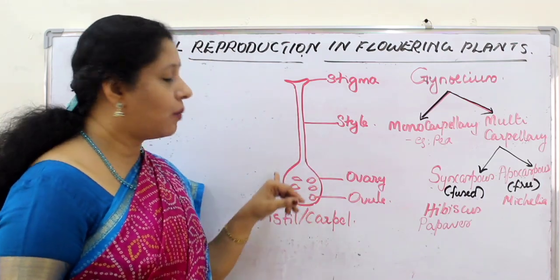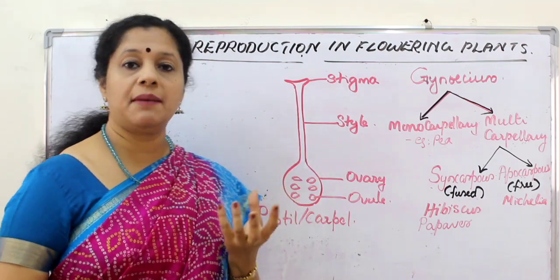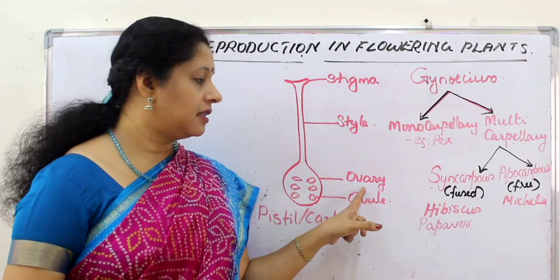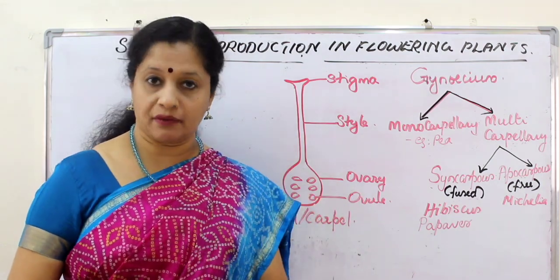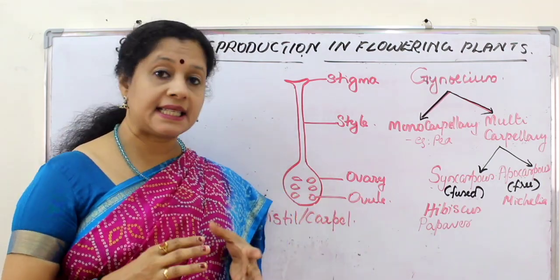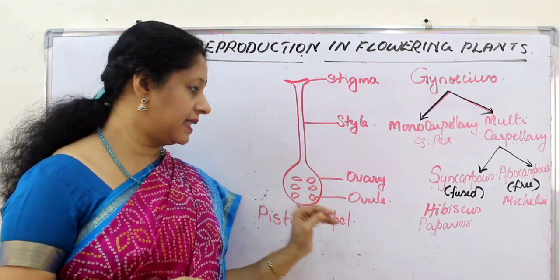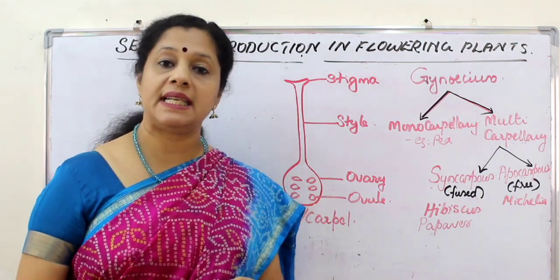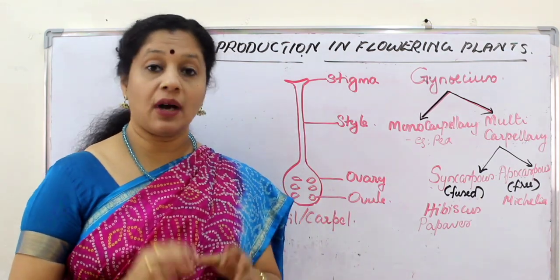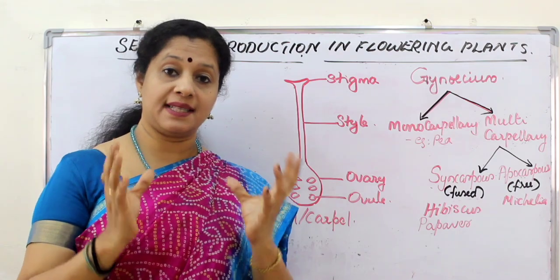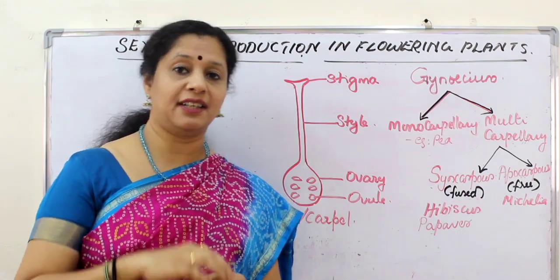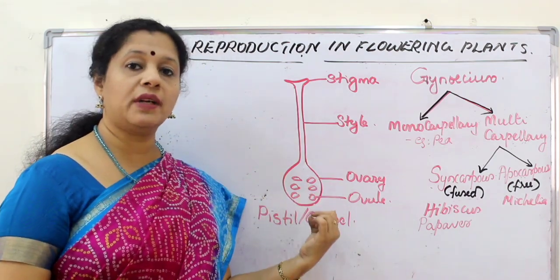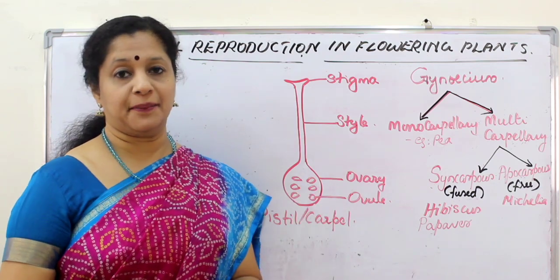The ovary is the swollen basal part. After fertilization, this ovary will become the fruit. Inside the ovary we can see the ovules, and ovules develop into seeds after fertilization. That is why seeds are found inside the fruit — the ovary becomes the fruit and the ovule inside becomes the seed.